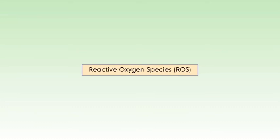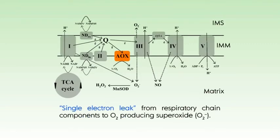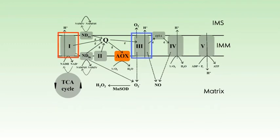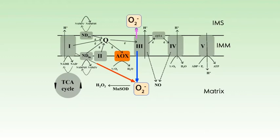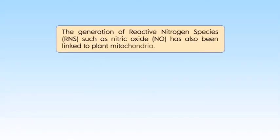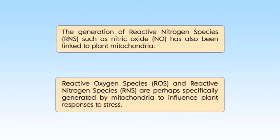Plant mitochondria are a source of reactive oxygen species. This is primarily due to single electron leak from respiratory chain components to oxygen, producing superoxides. Both Complexes 1 and 3 are proposed to be major sites of such electron leak. Both complexes release superoxide to the matrix, while Complex 3 may also release some superoxide to the intermembrane space, as shown in animals. Once produced, matrix superoxide can be further converted to hydrogen peroxide. The generation of reactive nitrogen species or RNS, such as nitric oxide, has also been linked to plant mitochondria. ROS and RNS are perhaps specifically generated by mitochondria to influence plant responses to stress, and may act as signaling molecules for stress acclimation.